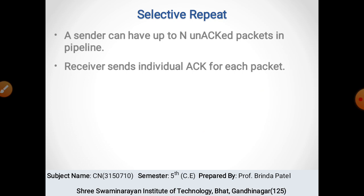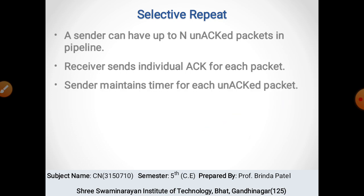Go-Back-N protocol में क्या होता था कि receiver एक साथ जितने भी packets receive करता था उसका acknowledgement sender को भेजता था। अगर उसको packet receive नहीं होता तो जब तक वो packet नहीं मिलता, उसके बाद के जो भी packets मिलते उनका acknowledgement discard करता जाता। पर selective repeat में ऐसा नहीं होगा — receiver individual acknowledgement sender को भेजेगा। Sender maintains a timer for each unacknowledged packet.